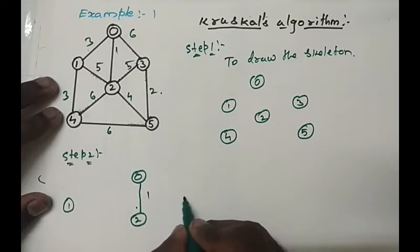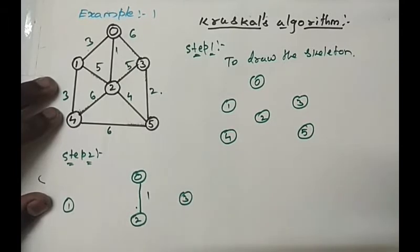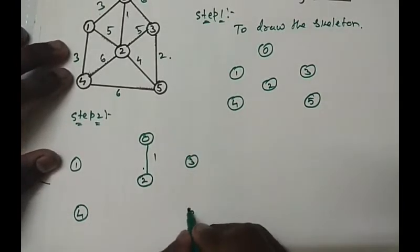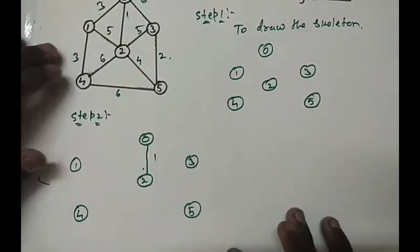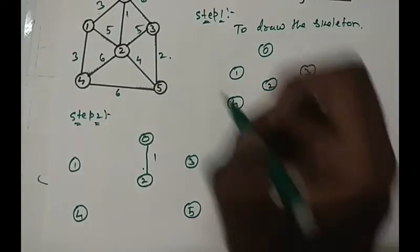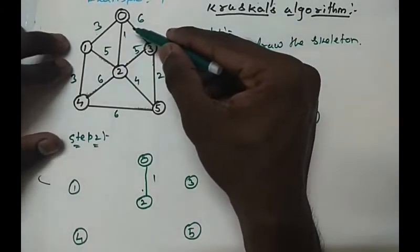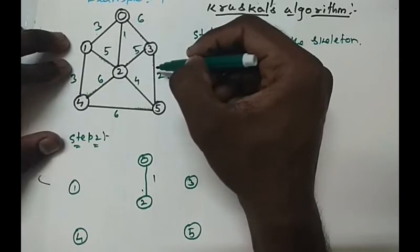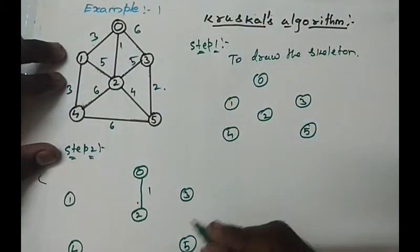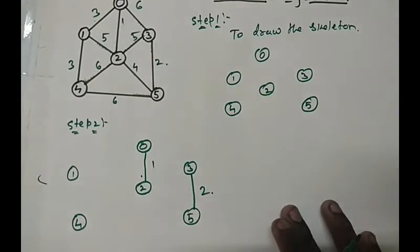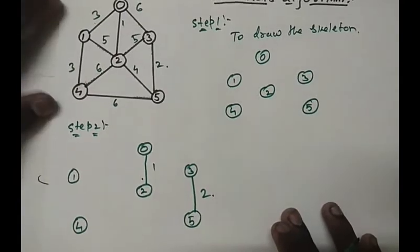First, draw the skeleton of the tree which is 0 to 2. So 1. The next minimum value in this one is already drawn and the next minimum value is 2 which is here. So next is 2.